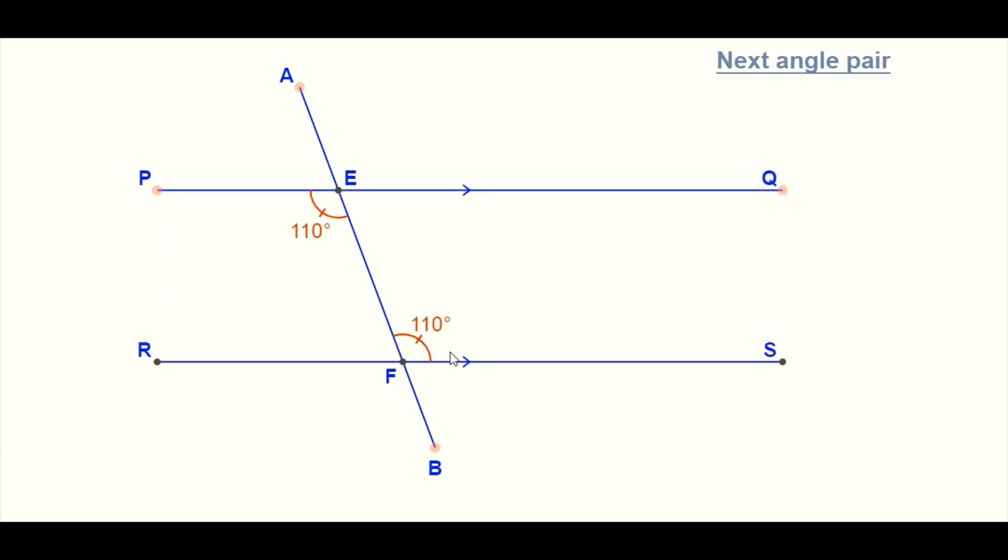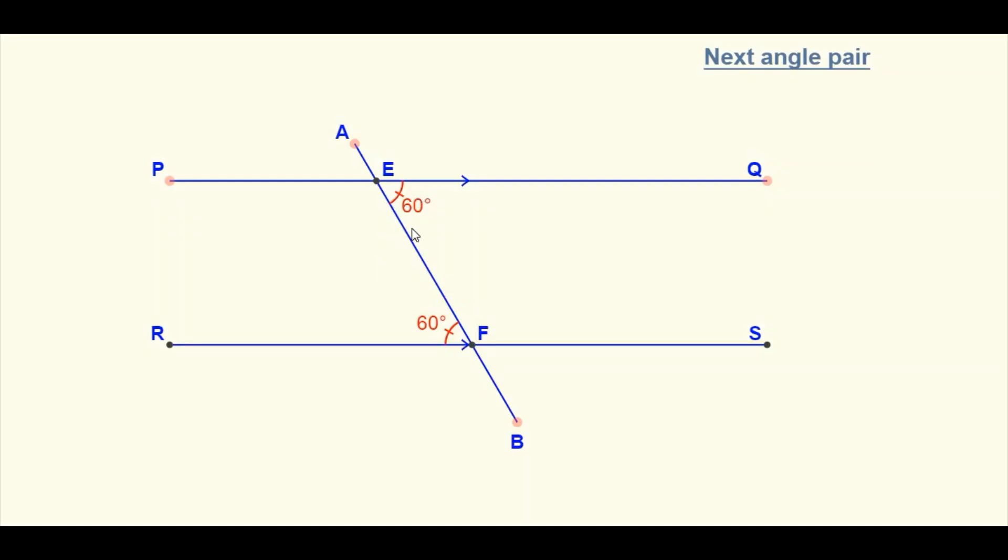Now these angles are formed when you have a pair of parallel lines being intersected by a transversal as you can see here. Now both angles are equal. Both angles have a measure of 60 degrees, as you can see here.